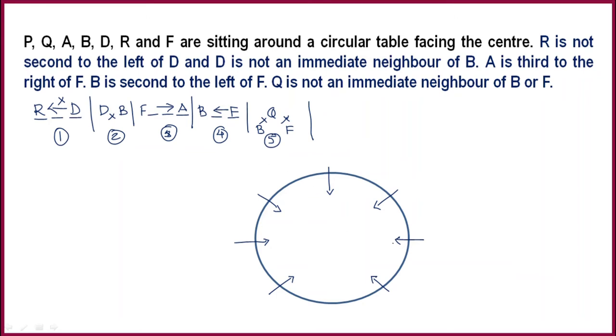If you see the third clue, A is sitting third to the right of F. First, second, third right. So here you have got A. A is sitting third to the right of F. Now B is second to the left of F, so B is sitting to the left of F. These two clues have been used.